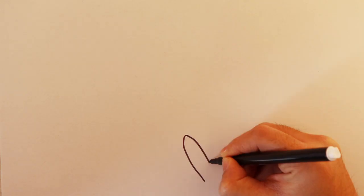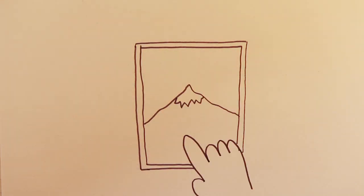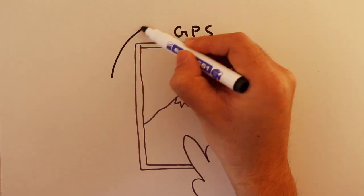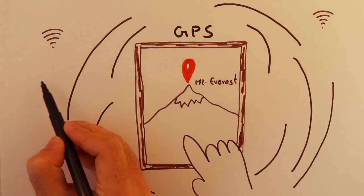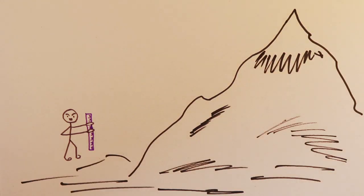Well, the straightforward answer could have been they simply used GPS technology. But remember, GPS technology evolved only by the end of millennium, whereas we knew the height of Mount Everest even before that. So, in this episode, let's try to figure it out together. How was the height of Mount Everest measured for the first time? Or, making the question very simple, how can we measure the height of any mountain?